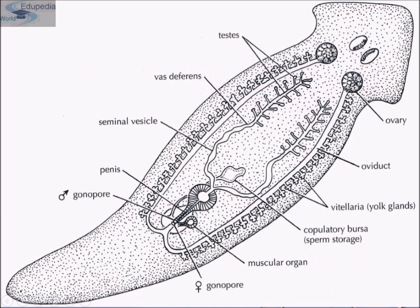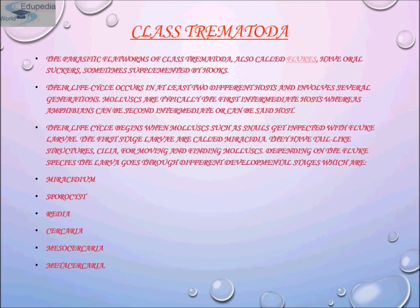The second class is Trematoda, the second most diverse group of parasites. The parasitic flatworms of class Trematoda are also known as flukes. They have oral suckers, sometimes supplemented by hooks. Flukes have retained the same body form and digestive cavity as the turbularians. Their life cycle occurs in at least two different hosts and involves several generations.